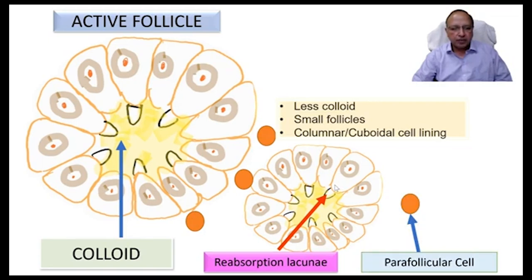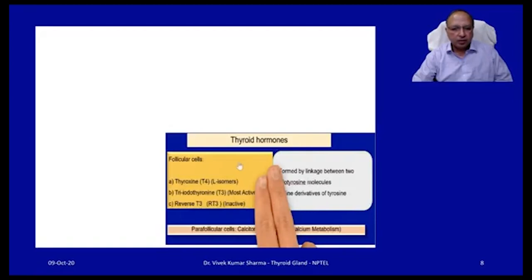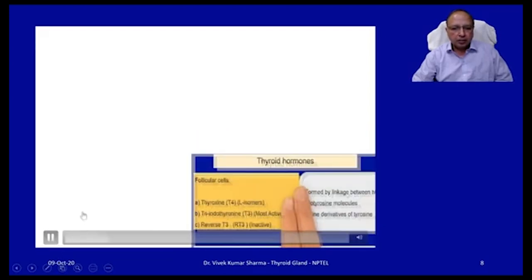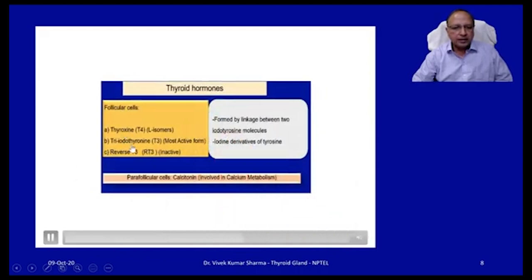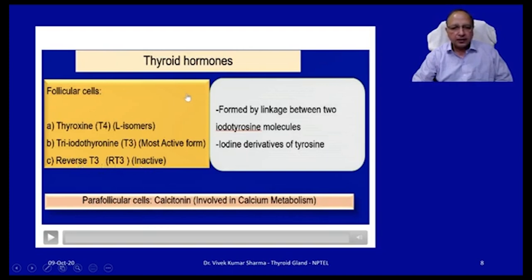Apart from follicular cells, there is also the presence of parafollicular cells, which are involved in the synthesis of calcitonin hormone. Primarily, two major hormones are secreted by the thyroid gland: thyroxine (T4) and triiodothyronine (T3), which is the most active form. There is also production of reverse T3 (RT3), which is inactive. These thyroid hormones are iodine derivatives of tyrosine, formed by the linkage between two iodotyrosine molecules. The parafollicular cells produce calcitonin, involved primarily in calcium metabolism.